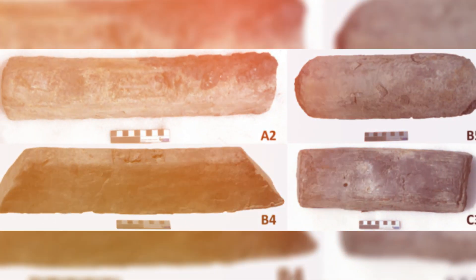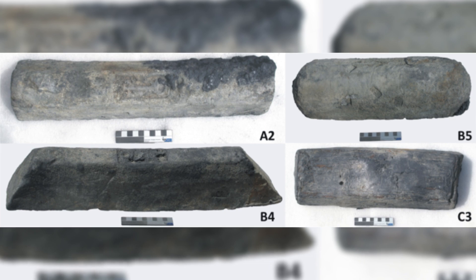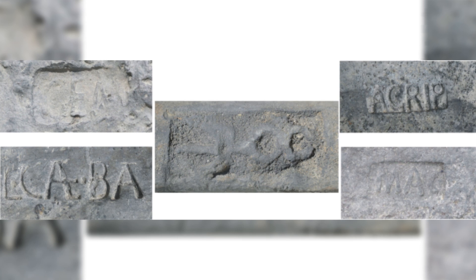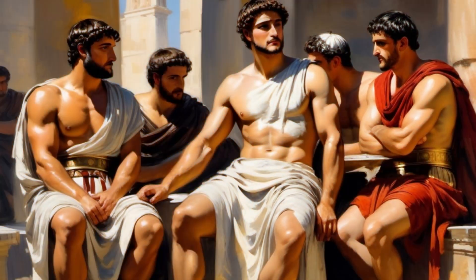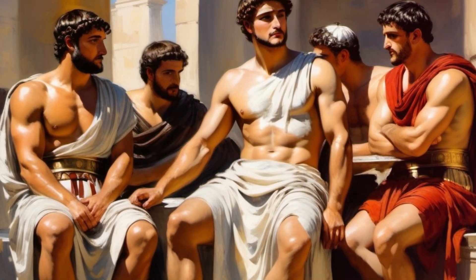The inscriptions on the ingots told their own story. Each one was stamped with the names of the people or businesses responsible for producing them. One stamp identified a company owned by two Romans, Marcus and Gaius Pontinellius, who had produced over 700 of the ingots.